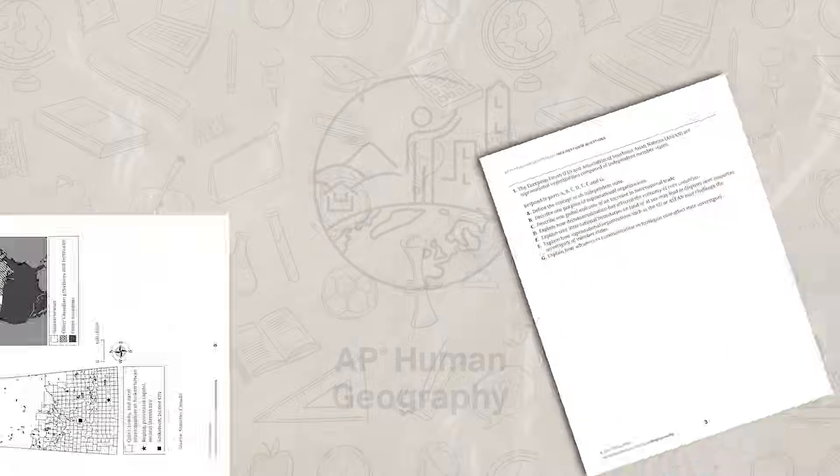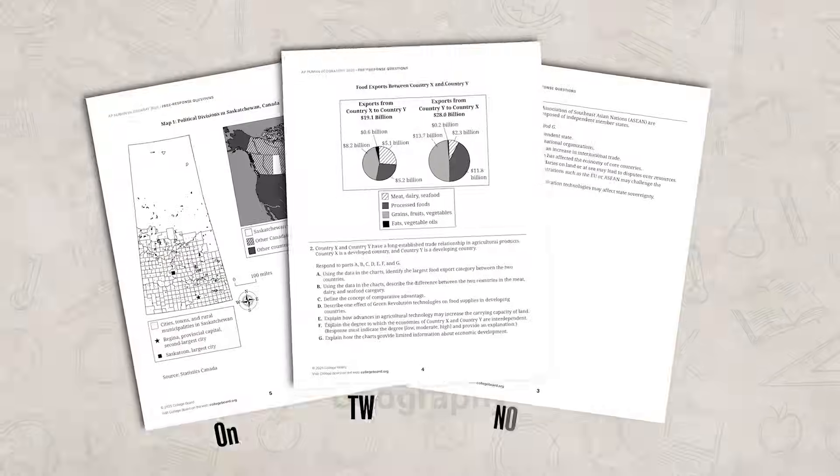On the AP national exam, you will have to answer three FRQs, one of each type, but for your class it'll most likely be different. So make sure you talk to your teacher to see how many questions you will have and which types of FRQs will be on your test.